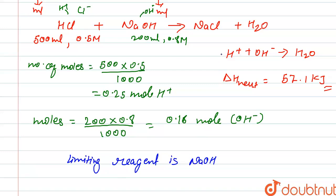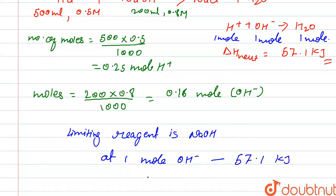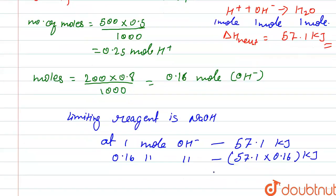1 mol of H⁺ and 1 mol of OH⁻ produce 1 mol of water. The heat of neutralization at 1 mol is 57.1 kJ. So for 0.16 mol of OH⁻: heat = 57.1 × 0.16 = 9.136 kJ.